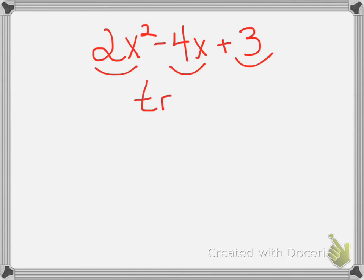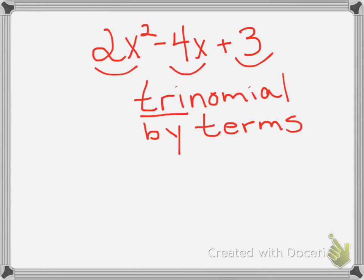So let's just start right with 2x² - 4x + 3. That is a polynomial of 1, 2, 3 terms, and therefore it is classified as a trinomial. Now that's not all that we can do. We can also not just classify it by terms, which is what this is. We can also look at the exact same polynomial and classify it by what we call degree. So by degree.